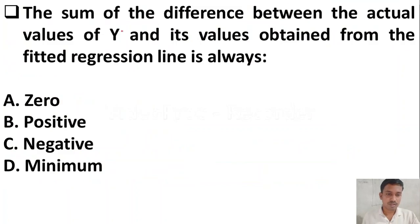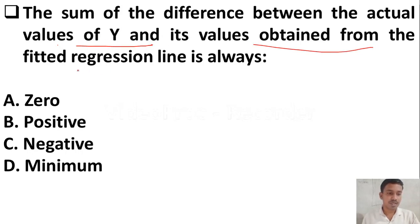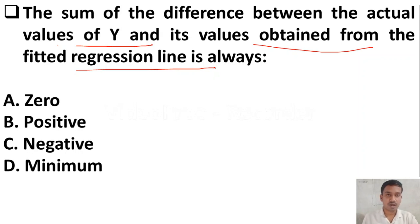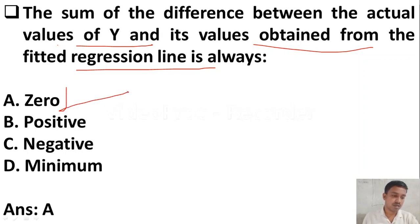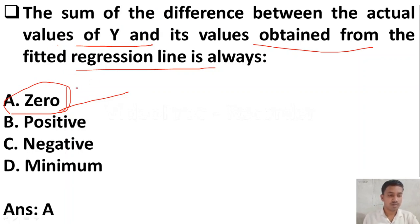The next question: the sum of the difference between the actual values of Y and its values obtained from the fitted regression line is always — option A zero, option B positive, option C negative, option D minimum. The answer is zero. The sum of the differences between the actual values of Y and its fitted regression values is always zero.